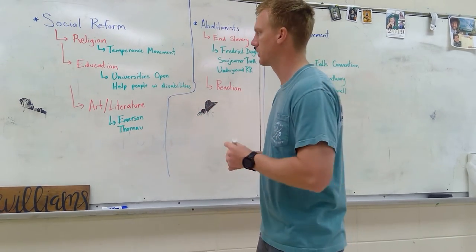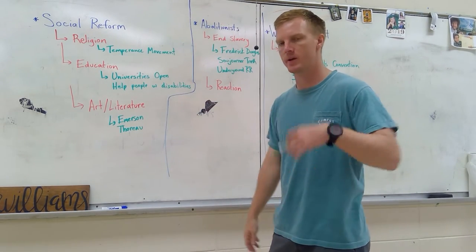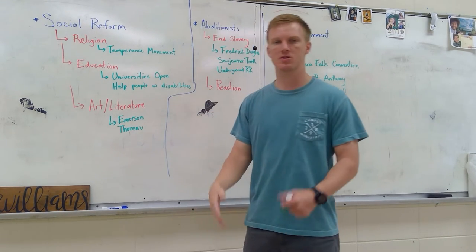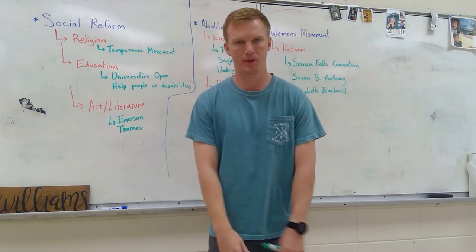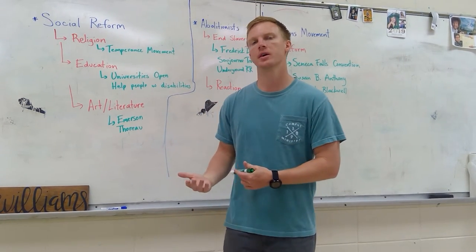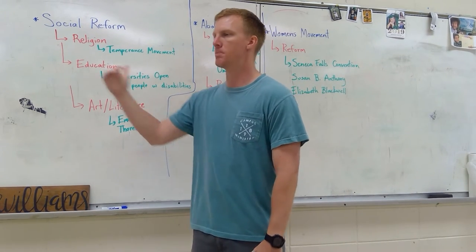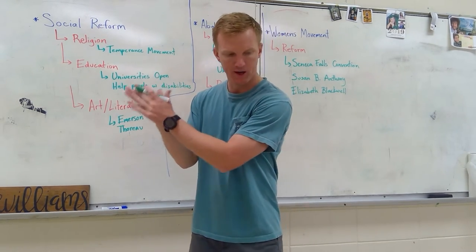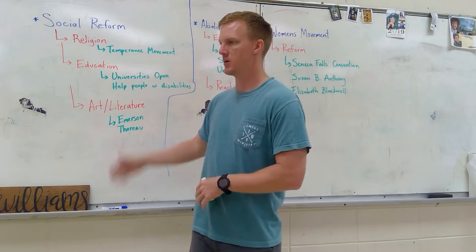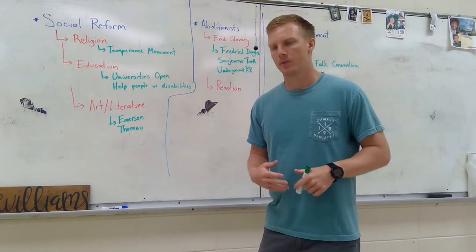Moving on to education. During this time of social reform, we see universities and colleges open. People started helping people with disabilities. We saw the first school for the deaf opened up during the social reform time. They reformed education by taking it seriously—how can we educate our teachers, how can we help people with disabilities. We wanted fair and equal treatment to all people in education: African Americans, whites, disabilities, blind, deaf, things like that.